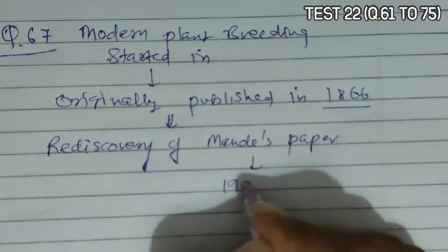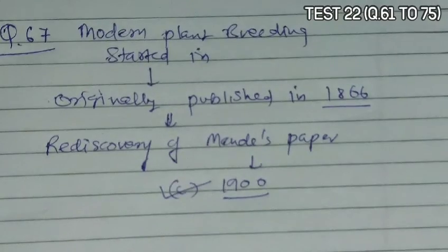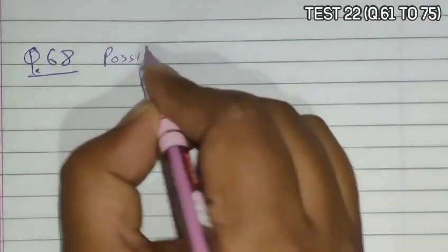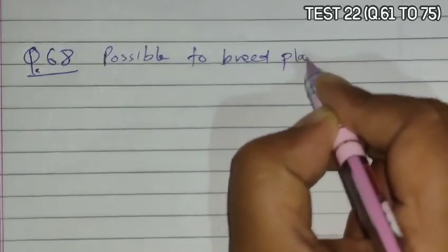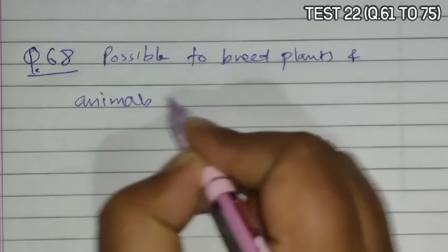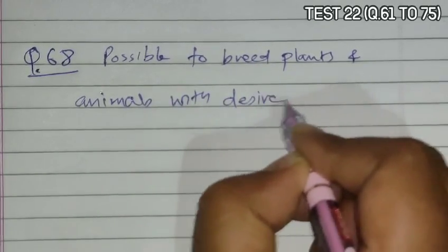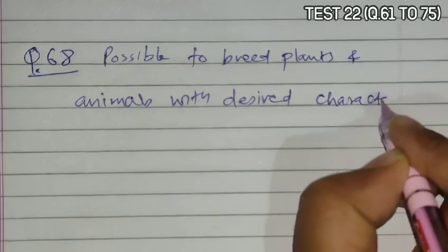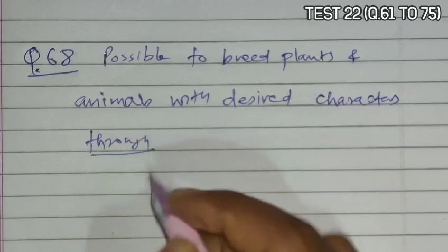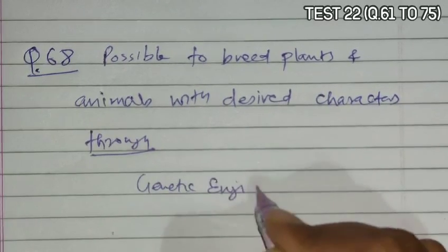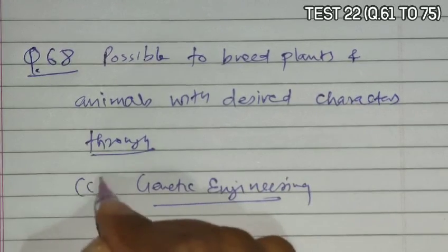The rediscovery of Mendel's paper occurred during 1900, so 1900 — that is option C — is the correct answer. Question 68 asks that it is now possible to breed plants and animals with desired characters through. This can be achieved by genetic engineering, which is a modern technique, so that is the correct answer — option C.